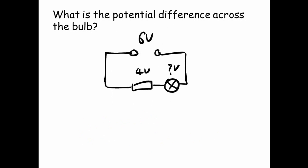What is the potential difference across the bulb? Well, we've got 6 volts going into our circuit. 4 of those volts are across the resistor, so we need to know what are the remaining volts across the bulb. So we've got 6 equals 4 plus something. So 6 minus 4 gives us 2 volts across the bulb.